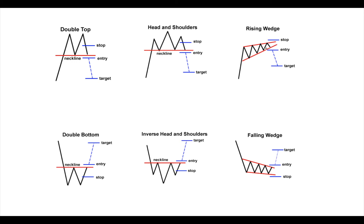We need to remember that continuation patterns occur frequently. The double bottom is the opposite of the double top — same rules apply, it's just a bearish-to-bullish reversal. Price comes down bearish, hits a bottom, peaks up to a resistance, comes back down to support, then back up. If it breaks the neckline — the resistance level — that's your entry. Stop loss is below the bottom, and the target is the distance between the neckline and the top of the peak.